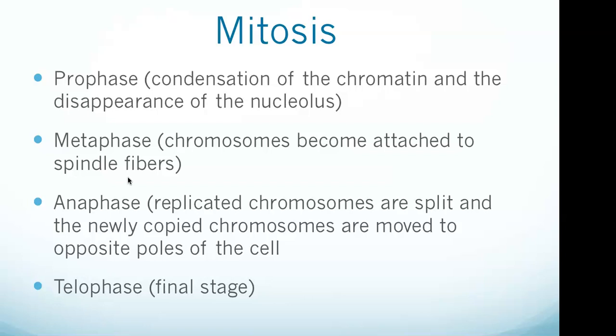Anaphase is the stage of mitosis after metaphase when replicated chromosomes are split and the newly copied chromosomes — the daughter chromatids — are moved to opposite poles of the cell. This is the shortest phase of mitosis. Telophase is the final stage in both meiosis and mitosis in a eukaryotic cell. During telophase, the effects of prophase and prometaphase — the nucleolus and nuclear membrane disintegrating — are reversed as chromosomes reach the cell poles.